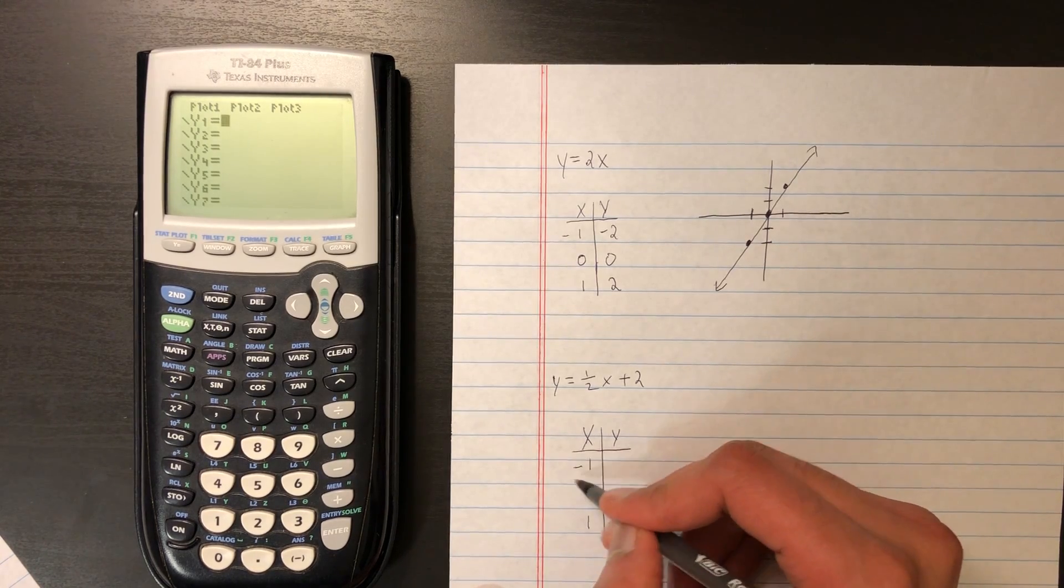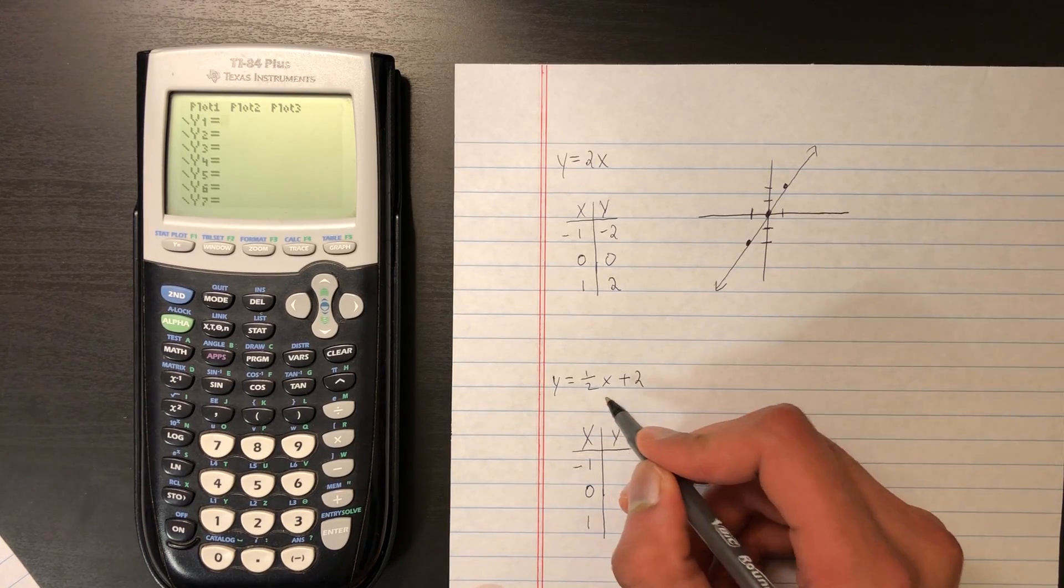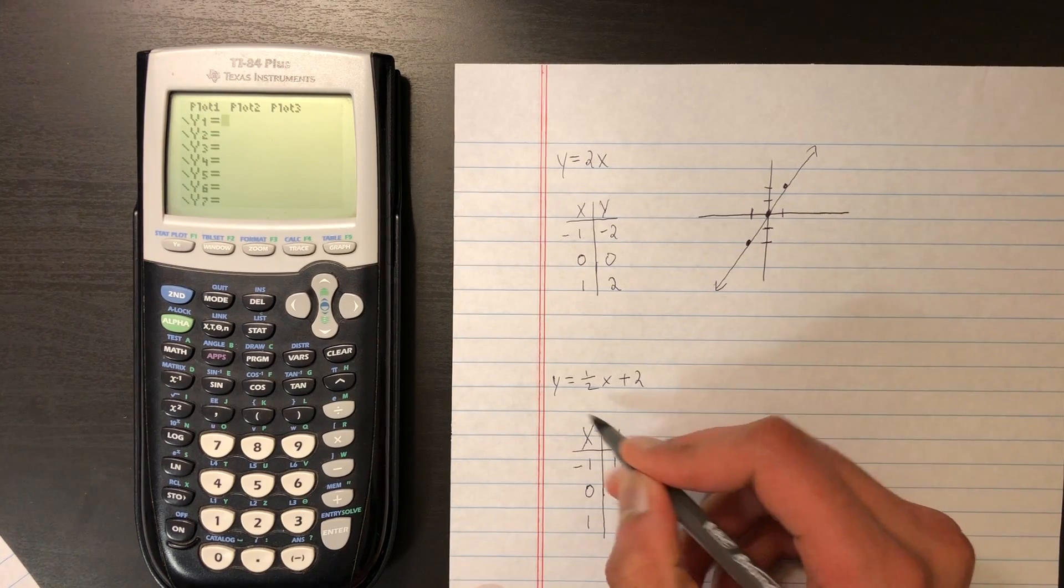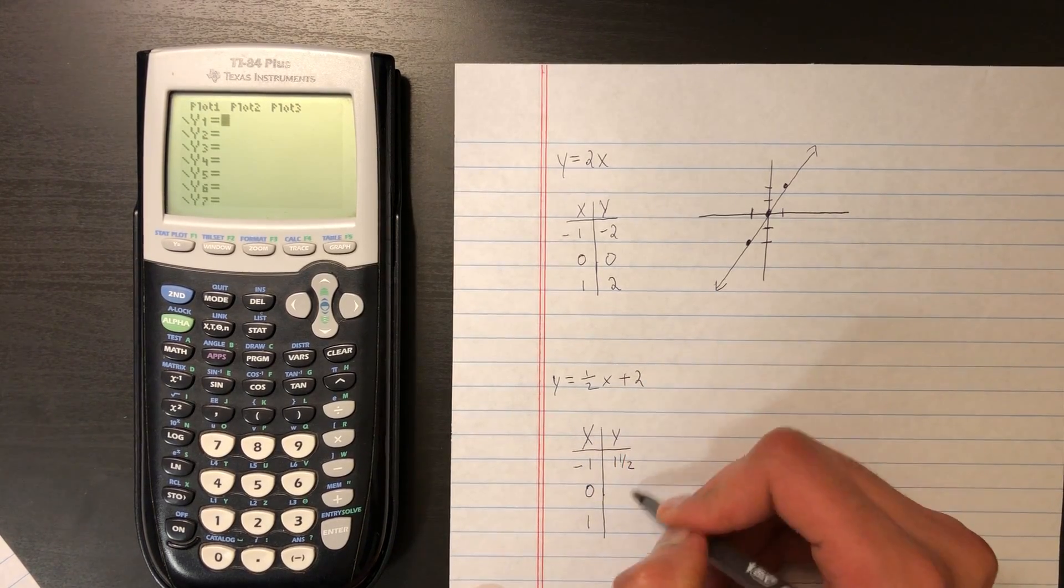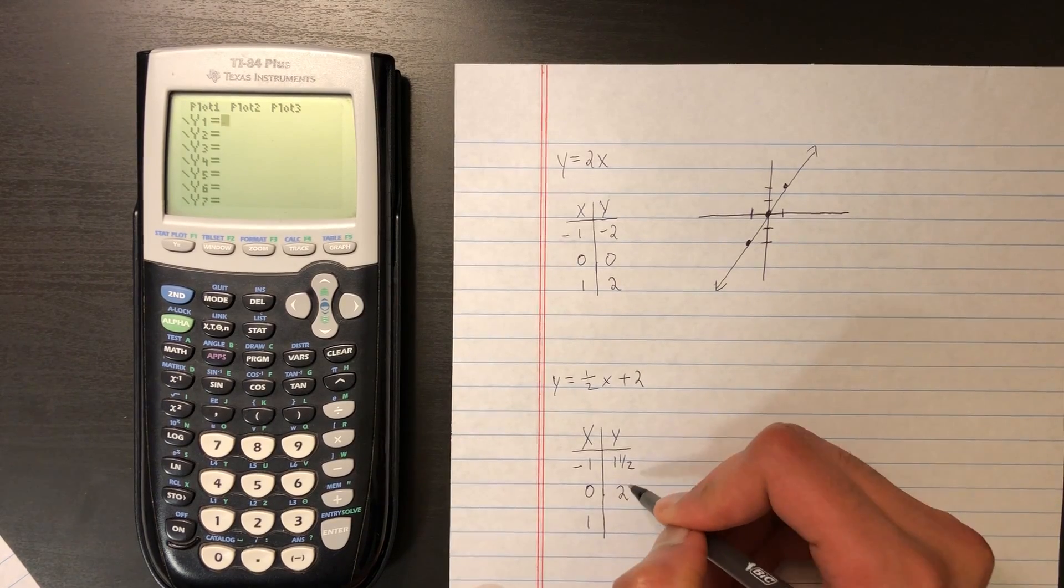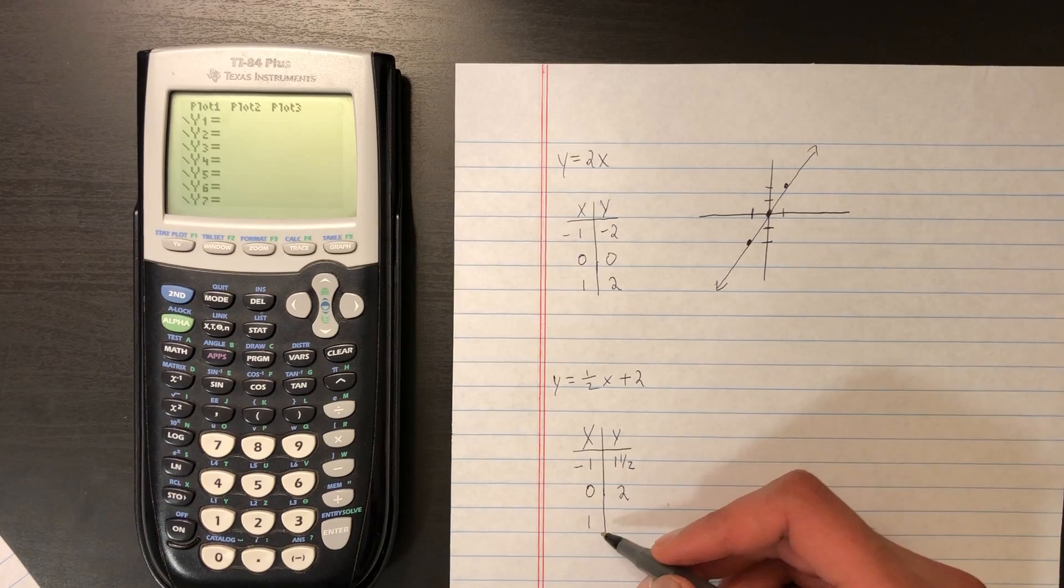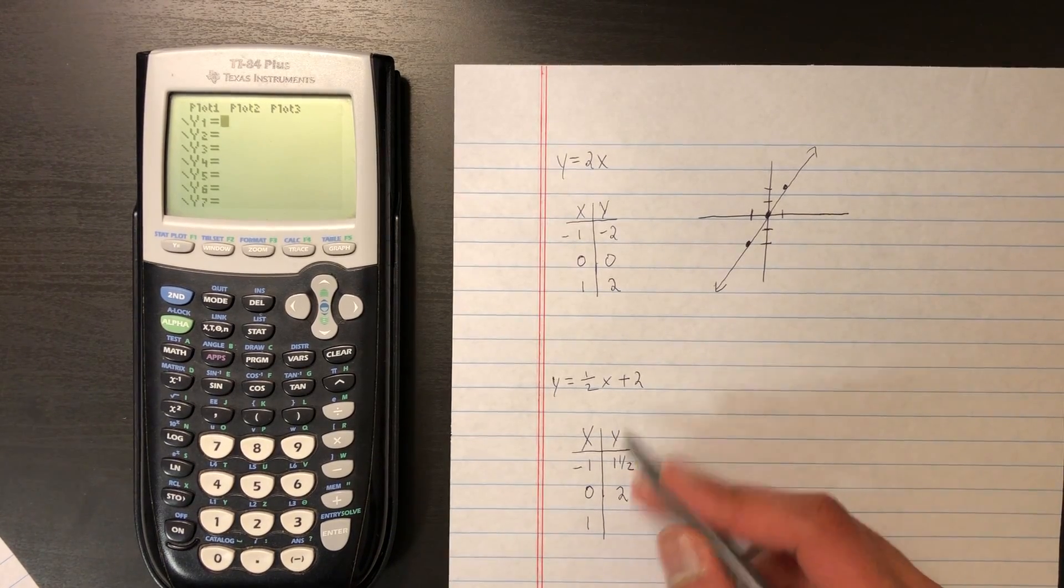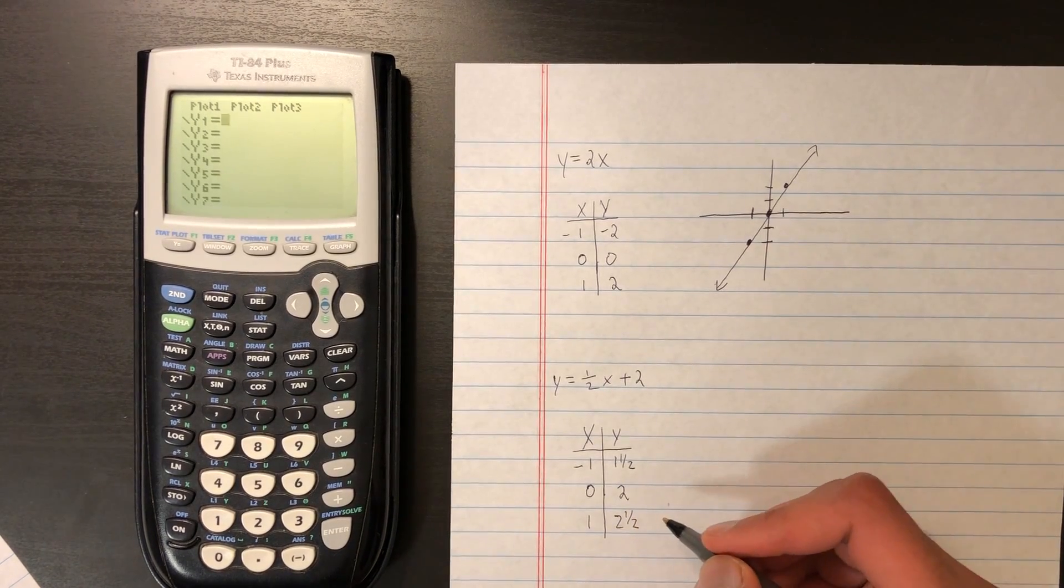And for our y values, let's see what we get. So plugging in negative 1 into 1 half x yields negative 1 half plus 2. That's 1 and 1 half. Our y intercept, let's find it. Plugging in 0 for x, we get 2. And lastly, we plug in 1 into 1 half x. We get 1 half plus 2. That gets us 2 and 1 half.